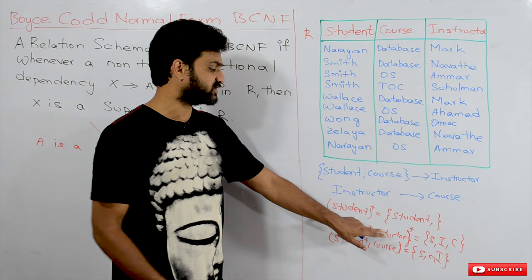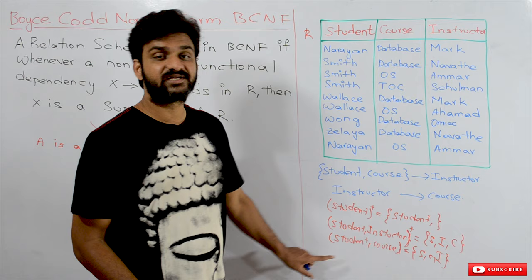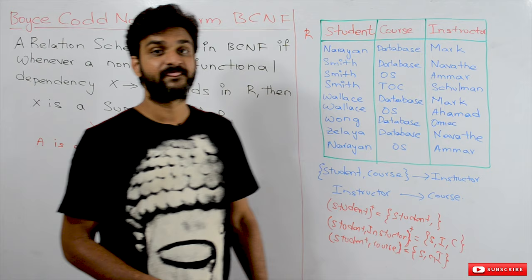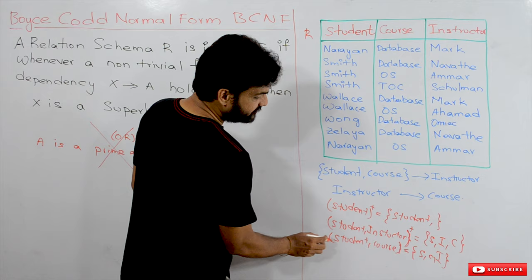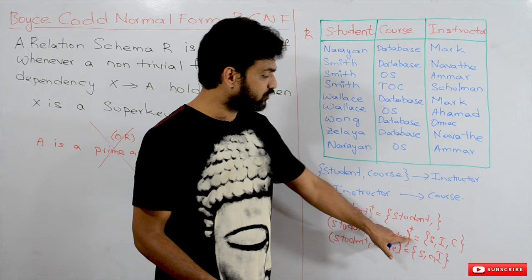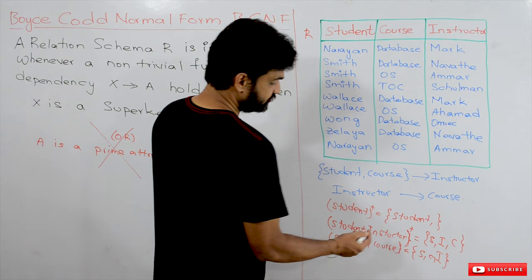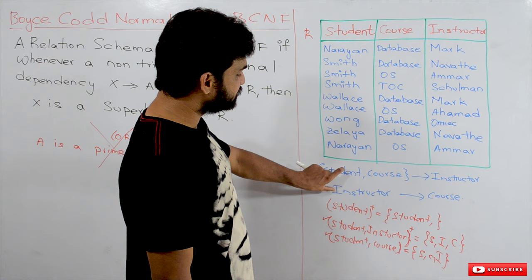We do not take the Instructor, Course combination because its closure cannot determine the Student attribute, which is not on the right-hand side of any functional dependency. So the two candidate keys for this relation are: Student, Instructor and Student, Course. Adding any attribute to either of these gives a super key.